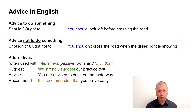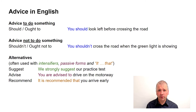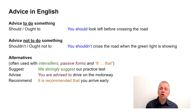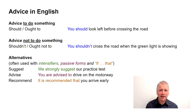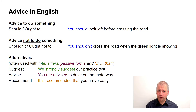The two main words used for advice in English are 'should' and 'ought to'. For example: 'You should look left before crossing the road' or 'You ought to look left before crossing the road.' If you are advising someone not to do something, you simply make it negative: 'You shouldn't cross the road' or 'You ought not to cross the road.'